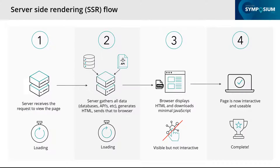Looking at this in a diagram: on the left-hand side, the first step is the server receives our request. It then starts calling out to APIs, databases, and handling personalization — during this time, the user is still seeing the loading screen. Once everything's been rendered, that HTML is sent down to our user in step three, with potentially minimal JavaScript being executed on the user's browser. The last step: our page is fully interactive. Between steps three and four is generally very quick because there's minimal JavaScript to execute.